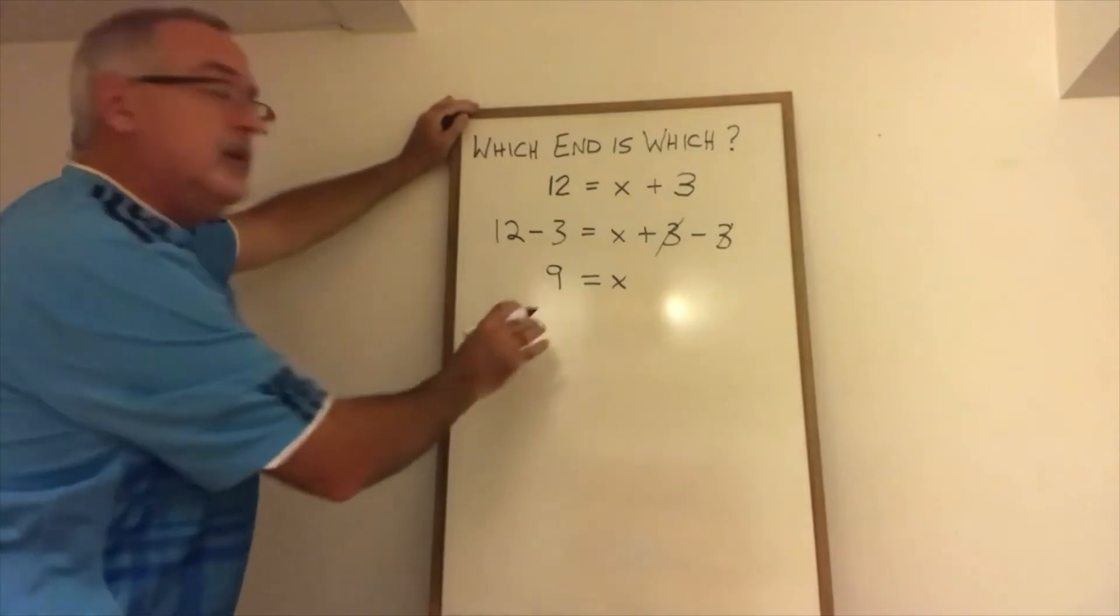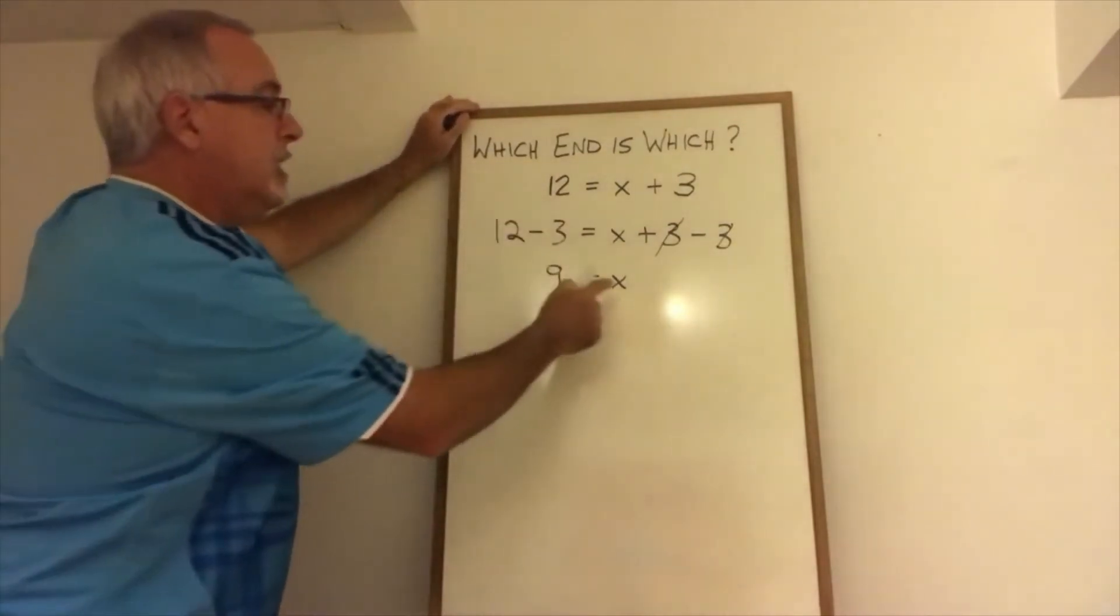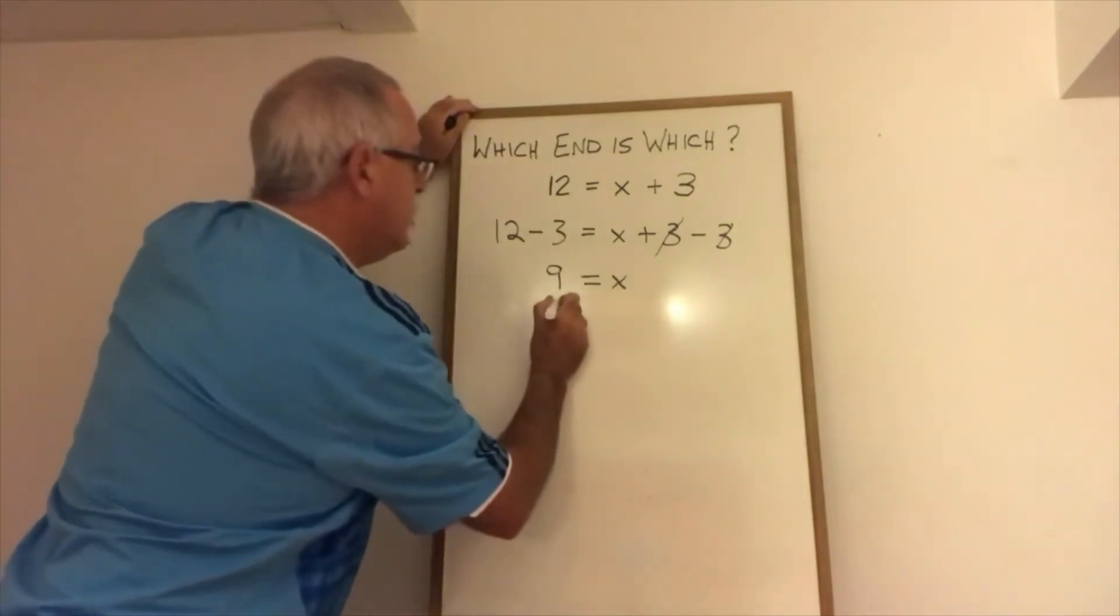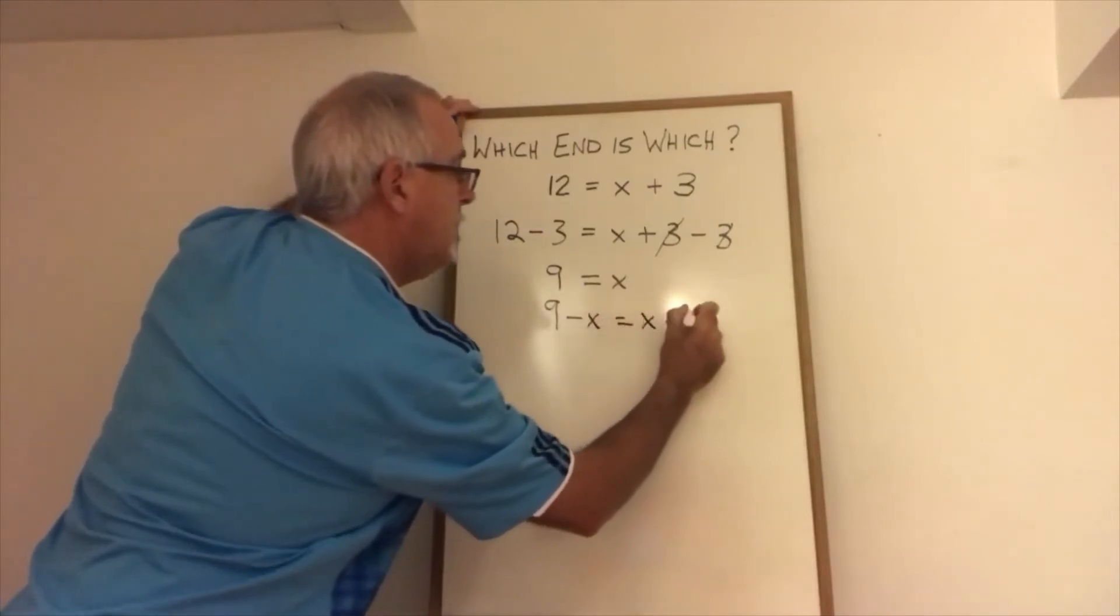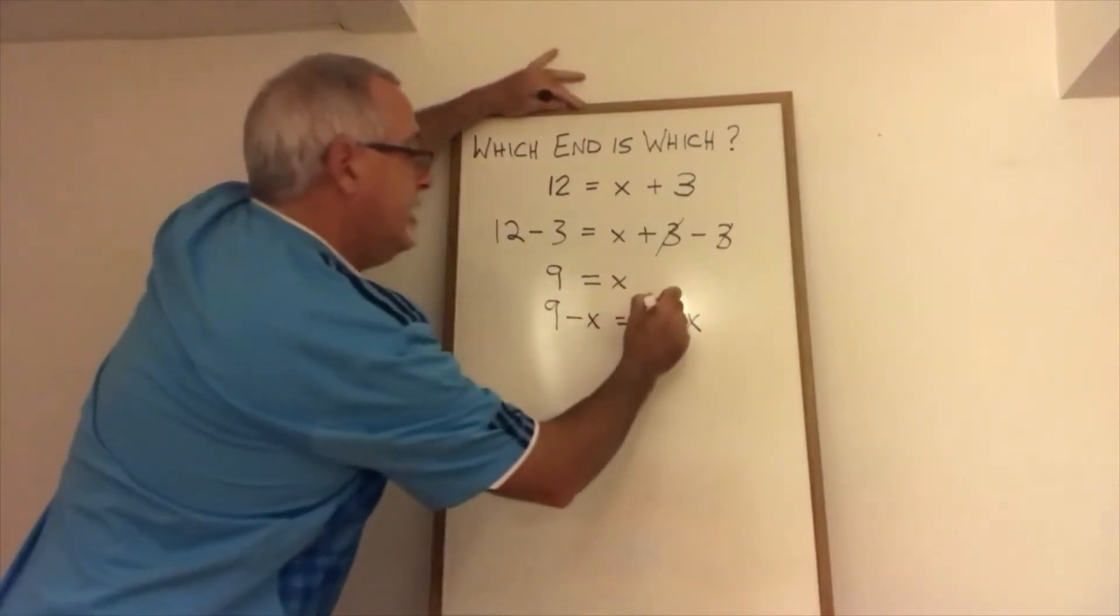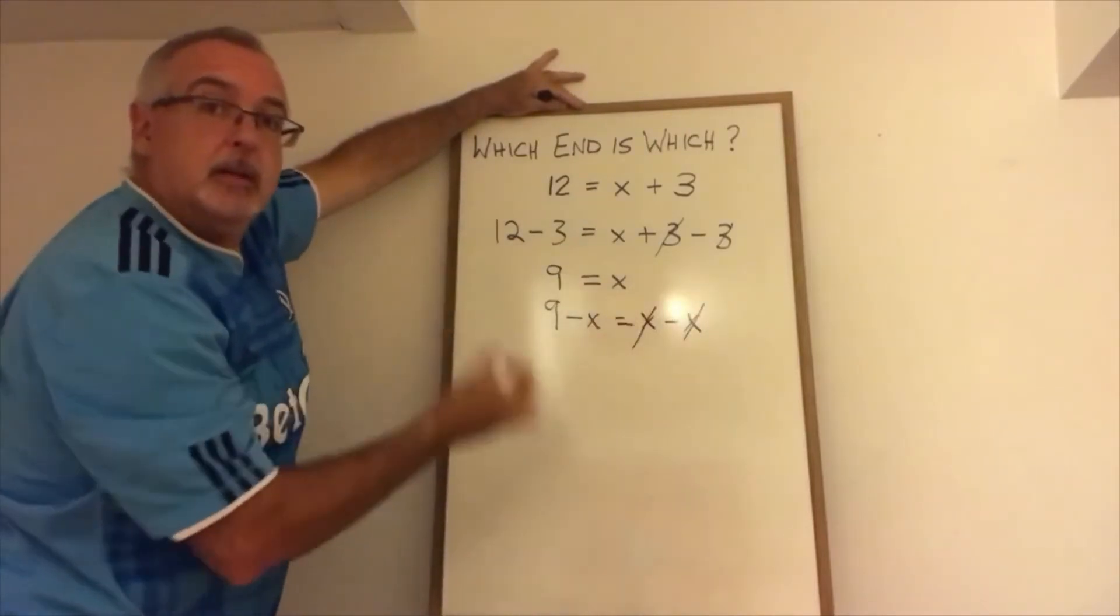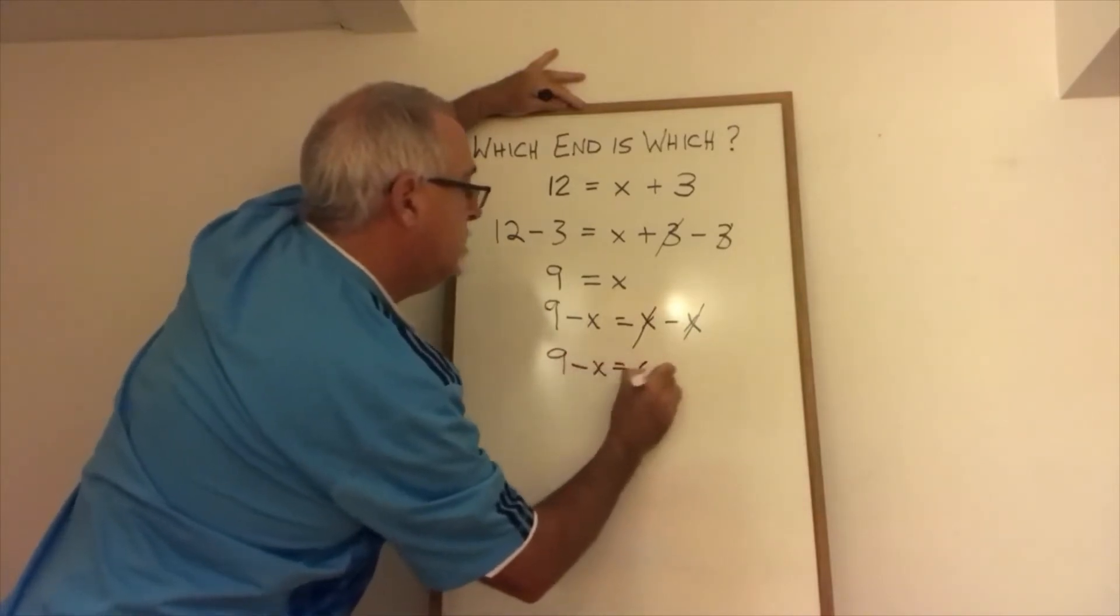Well, it doesn't matter. And I can use algebra to show why it doesn't matter because I can move the X to the other side. So what I'm going to do is I'm going to subtract an X from both sides. Algebra allows me to do that. These cancel, but X minus X, it just doesn't disappear. X minus X is zero. So I have nine minus X equals zero.